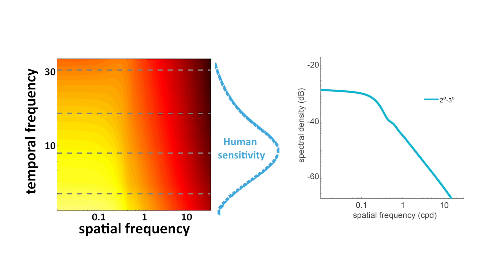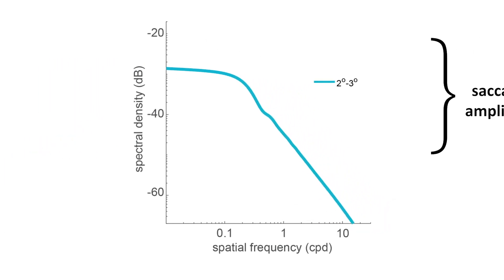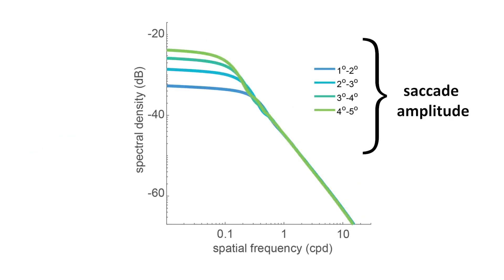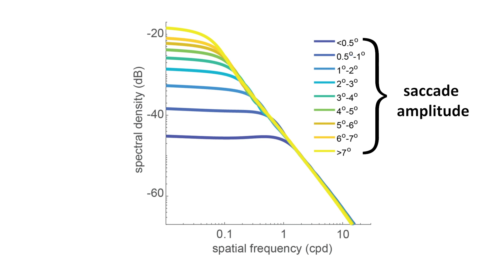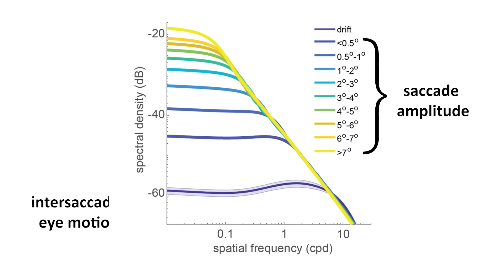This true regime pattern becomes evident if we integrate power across temporal range of human sensitivity. This is the amount of spatial power that is effective in driving the visual system. Presently, all saccades yield qualitatively similar redistributions, which approach the reformatting given by the inter-saccadic eye motion for very small amplitude.